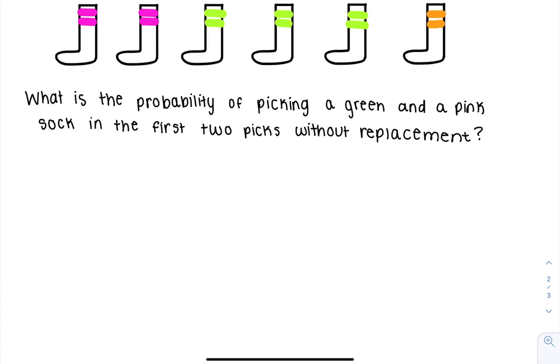So if I want to wear a pink and green sock, what I could do is I could either pick out a pink and then a green or I could pick out a green, then a pink. So first let's think out what would be the probability of picking out a pink, then a green.